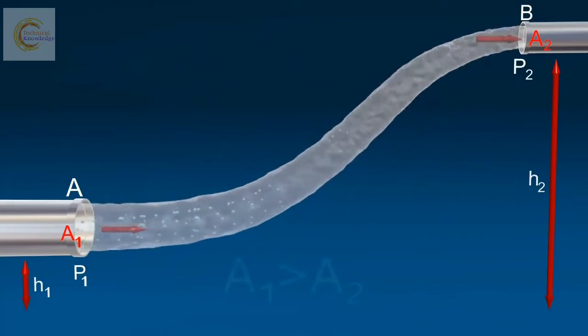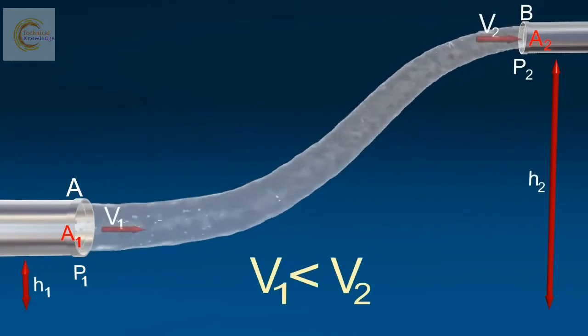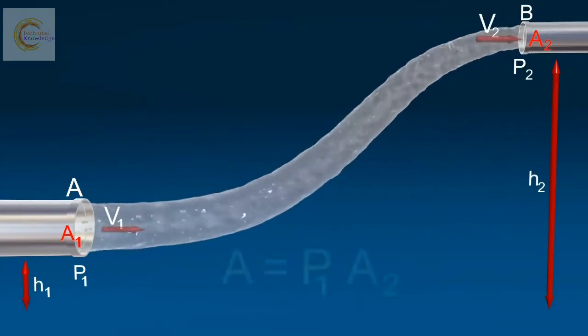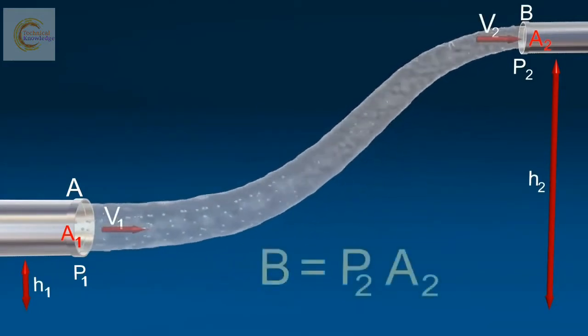Here, A1 is greater than A2. So, V1 is less than V2. The force on the liquid at A and at B.